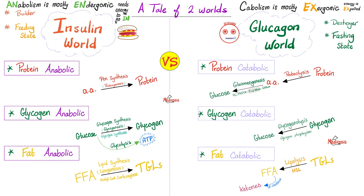A tale of two hormones — insulin land versus glucagon land. Insulin is an anabolic hormone, whereas glucagon is a catabolic hormone. Insulin is a builder; glucagon is a destroyer. Insulin is protein anabolic, glycogen anabolic, and fat anabolic — it builds up small amino acids into bigger proteins, small glucose into bigger glycogen, and small free fatty acids into bigger triglycerides. Whereas glucagon does the opposite: it breaks down proteins into amino acids, breaks down glycogen into glucose, and breaks down triglycerides into free fatty acids. Because insulin turns glucose into glycogen, you end up with less glucose in your blood. Because glucagon breaks down glycogen into glucose, you end up with more sugar in your blood.